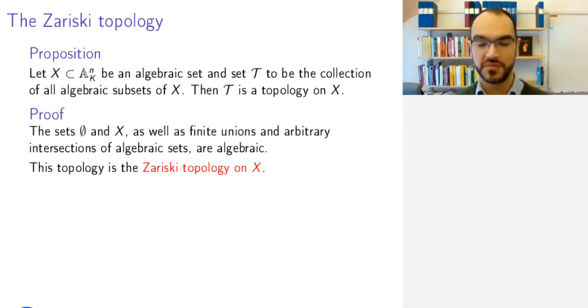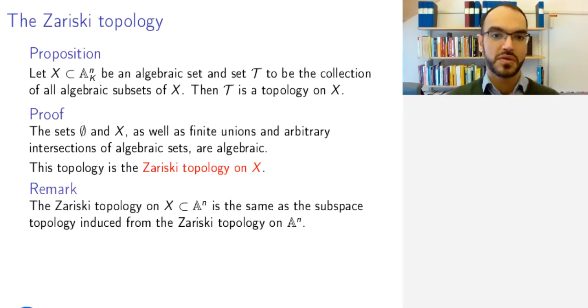This is called the Zariski topology, named after Oscar Zariski. One remark is that the Zariski topology on an algebraic set, you can get by defining it directly on the algebraic set using the relative versions of algebraic sets that we have looked at, or you can just define the Zariski topology on the whole affine space and say that you look at the induced subspace topology on an algebraic set X. This is one and the same thing, and I'll give it to you as an exercise to check this.